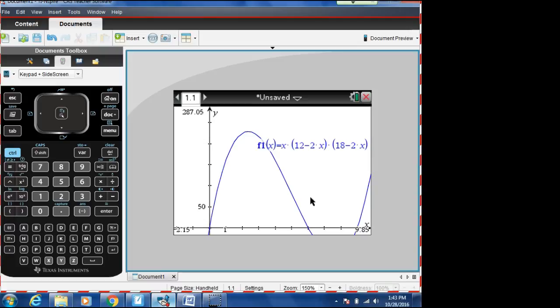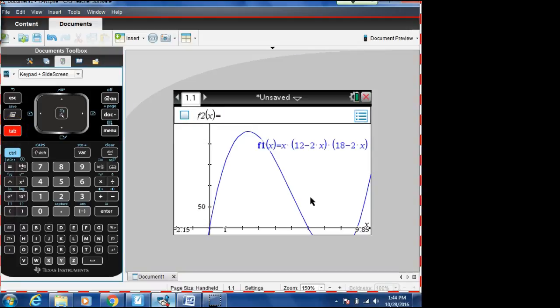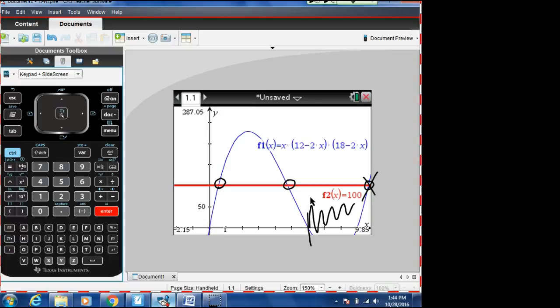So the question now that we're asking is, when is that volume 100? So we're going to add in a second function onto this graph. We're going to hit tab because tab then opens up a new function box. And in that function box, we're going to hit 100. Now, when I graph that, that's going to show me where 100 is. So I can see here now that I've got this intersection point, this intersection point, and that one over here. But again, I'm not worried about that because it's over here in this non-usable type area.